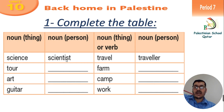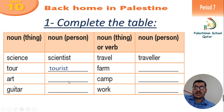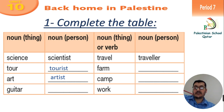So what we do is we add -IST to the noun thing to make it a noun person. Science becomes scientist. What about tool? Change it to noun person — it becomes tourist. We add -IST to it to become noun person. Art — what is the noun person? Artist. Guitar — guitarist.